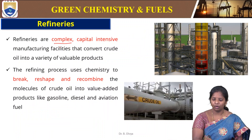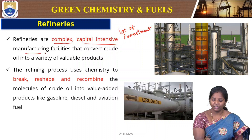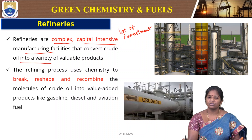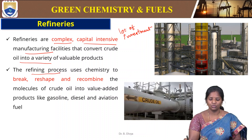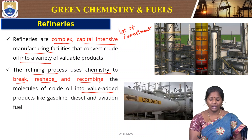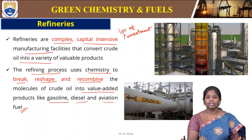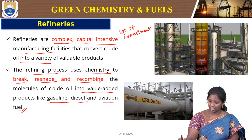Refineries are complex, capital-intensive manufacturing facilities that convert crude oil into a variety of valuable products. A lot of investment is required for a refinery. As soon as crude oil is imported, it goes to be refined and those refined products yield different petroleum products. The refining process uses chemistry to break, reshape and recombine the molecules of crude oil into value-added products like gasoline, diesel and aviation fuels — the fuels we use in automobiles and jet engines.